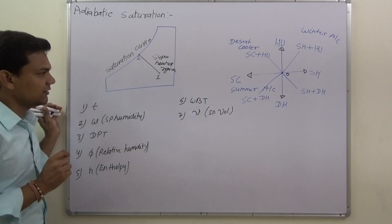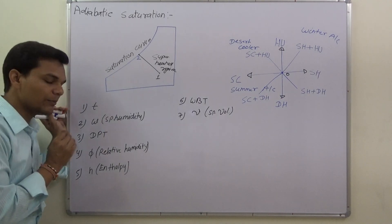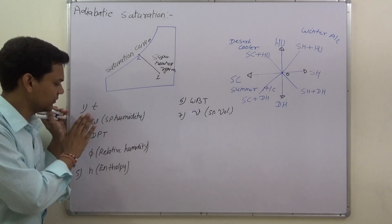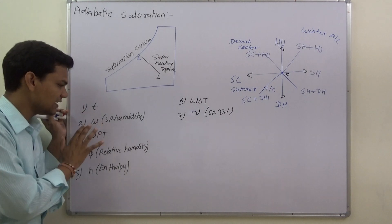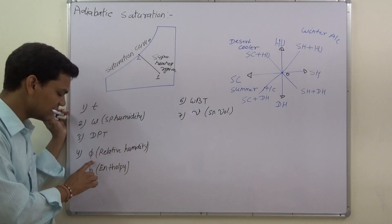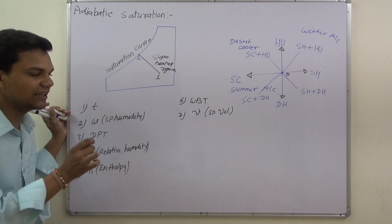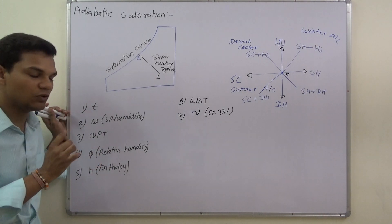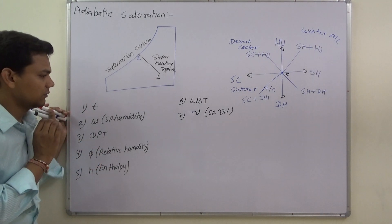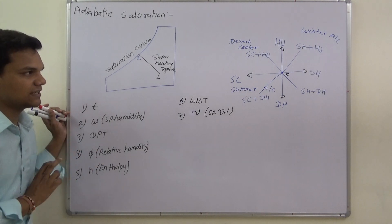In this condition, we look at the effect on various terms: temperature, specific humidity, dew point temperature, relative humidity, enthalpy, wet bulb temperature, and specific volume. What will be the effect on all these terms?